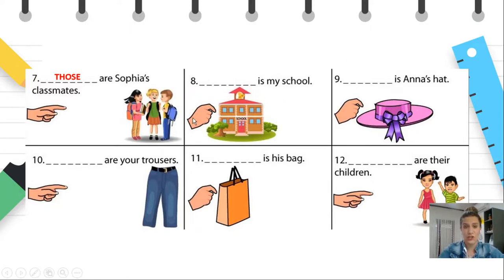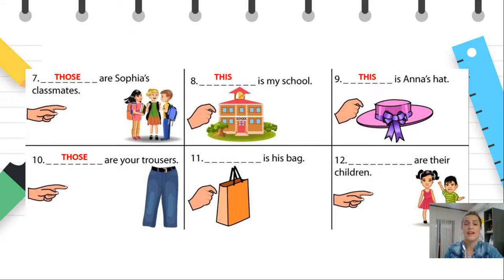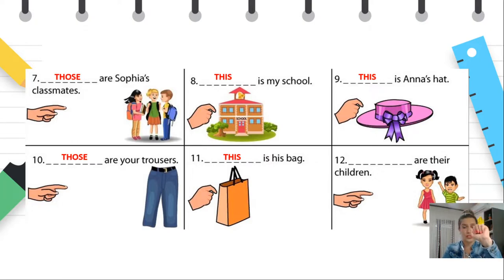The school is near to the hand, right next to you — school is singular, one school — so you say: This is my school. This is Anna's head, close to you, one head — this. Those are your trousers — trousers is considered a plural noun, even though it refers to one item, so remember: those are your trousers. Bag, close to you — this is his bag, singular. Far, two children, far from the hand — so you say: Those are their children.